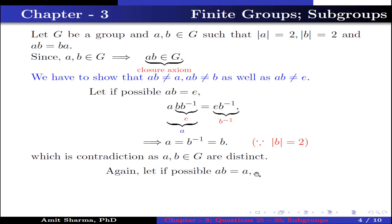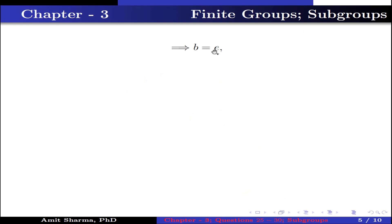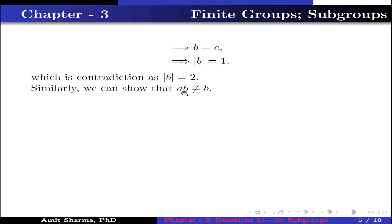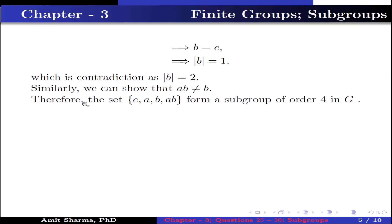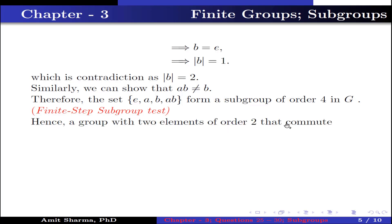Again suppose ab = a. Multiplying a inverse on both sides gives a⁻¹·ab = a⁻¹·a, so b = identity, which implies order of b is 1 — a contradiction since order of b is 2. Similarly we can show ab ≠ b. Therefore the set {e, a, b, ab} forms a subgroup of order 4 in G by the finite subgroup test. Hence a group with two elements of order 2 that commute must have a subgroup of order 4.